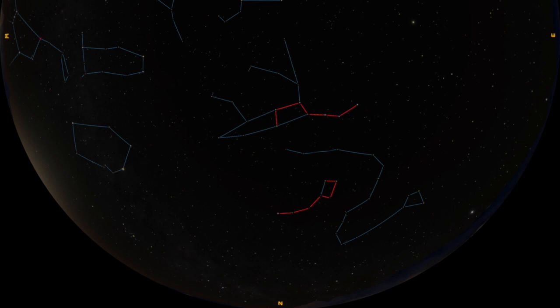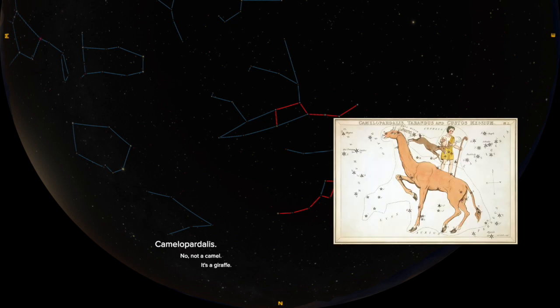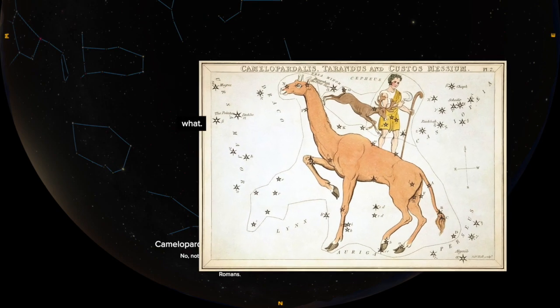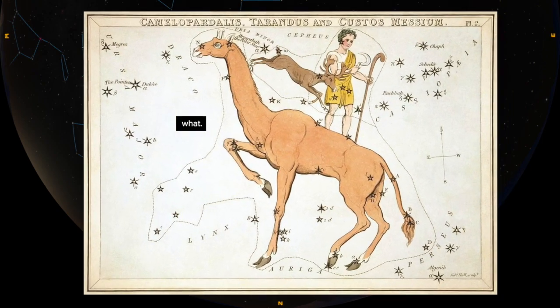Hiding between Auriga and the bears is one very strange constellation. Its name is Camelopardalis. And no, it's not a camel, but rather a giraffe. It's also faint and not very easy to see. And this is why imaginations are really important when looking at the night sky.